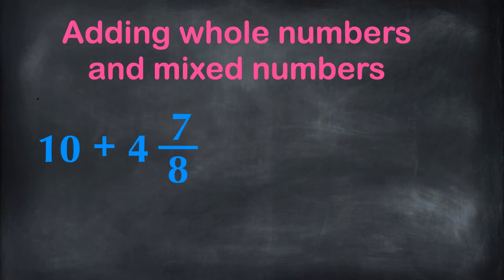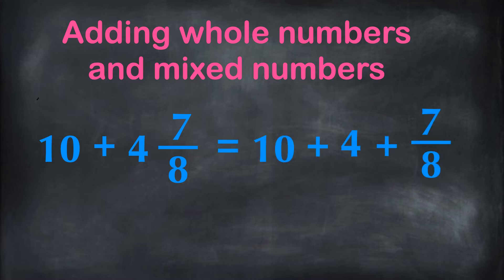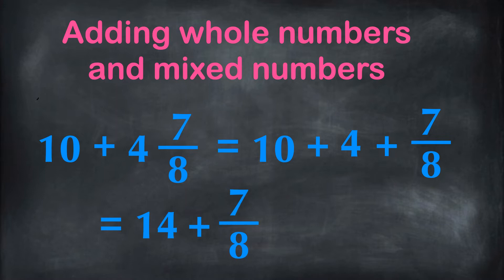Here we have a case where a whole number 10 and mixed number 4 and 7 eighths are added. Since 4 and 7 eighths is the same as 4 plus 7 eighths, we can add the whole numbers together. 10 plus 4 equals 14, and add the fraction 7 eighths. The final answer is 14 and 7 eighths.